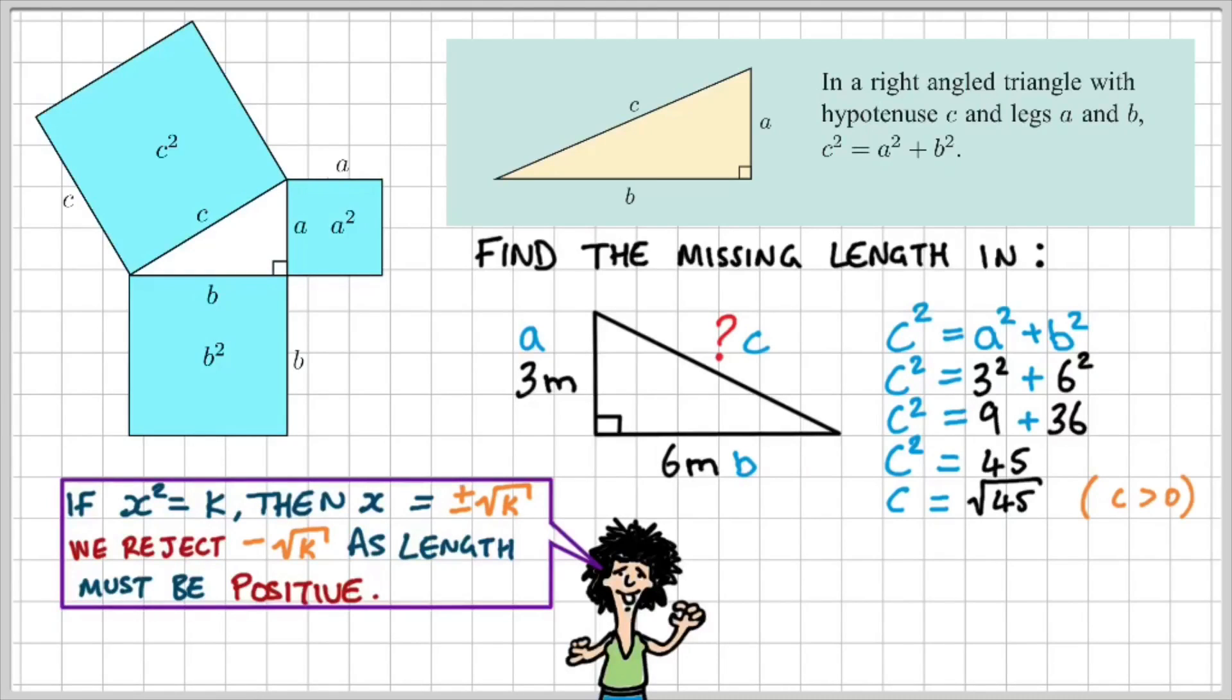So therefore, C is equal to the square root of 45 since C is positive and greater than zero. Therefore, the hypotenuse is about 6.7 meters, which is the square root of 45.